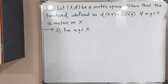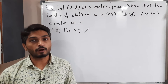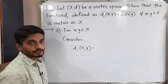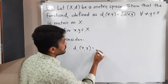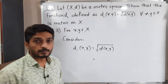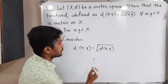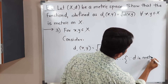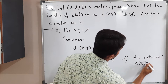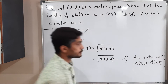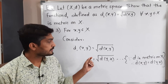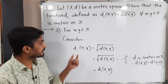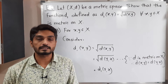Let us prove the third property, which is symmetry — we have to prove d1(x,y) = d1(y,x). Consider d1(x,y): by definition this equals square root of d(x,y). But since d is a metric, d(x,y) = d(y,x), so we can write square root of d(y,x), which is nothing but d1(y,x). We started with d1(x,y) and got d1(y,x), so d1 satisfies the third property, symmetry.